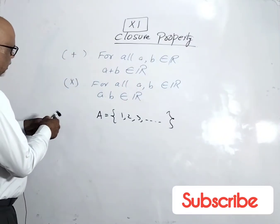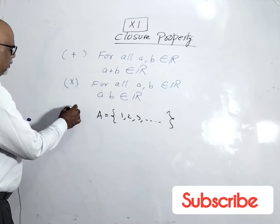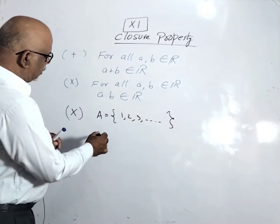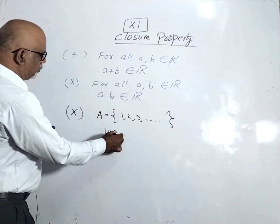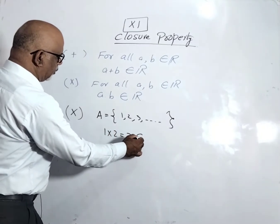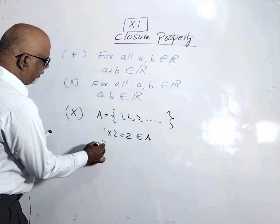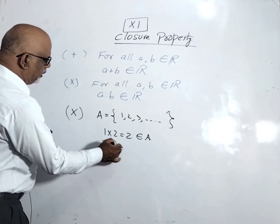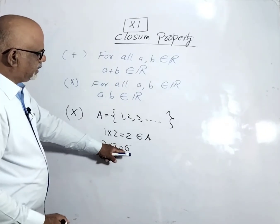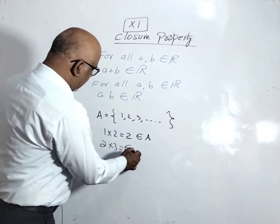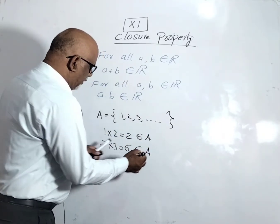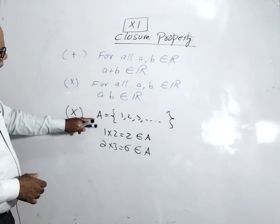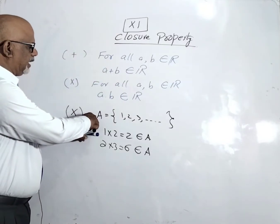Under multiplication, 1 multiplied by 2, that is 2, belongs to set A. 2 multiplied by 3, that is 6, also belongs to set A. That means under multiplication, the closure property exists in this set.